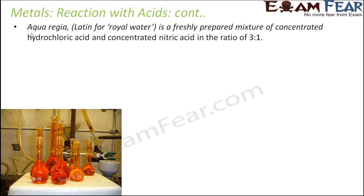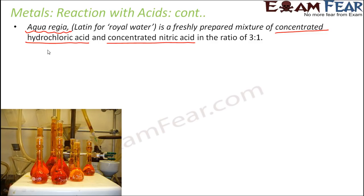The next acid we will consider is aqua regia — a very interesting acid. This is actually a combination of two acids: a freshly prepared mixture of concentrated hydrochloric acid and concentrated nitric acid (HNO3) in the ratio 3:1. So three-fourths is concentrated HCl and one-fourth is HNO3. The word 'aqua' means watery, so aqua regia means 'royal water.' It acts really magically and has something very interesting associated with it.